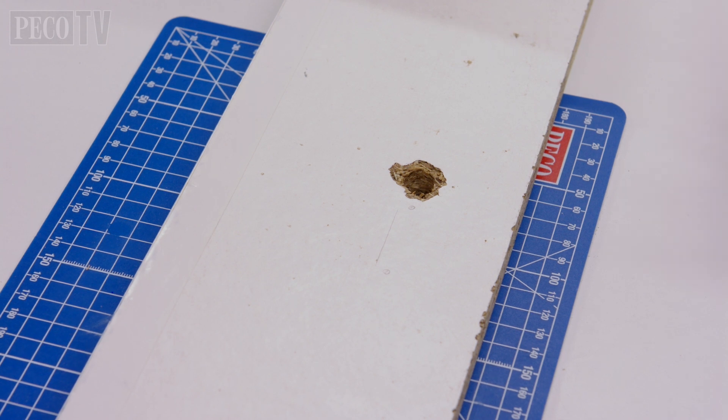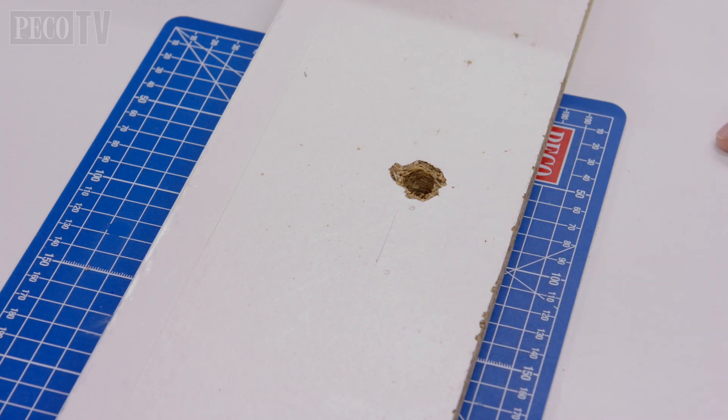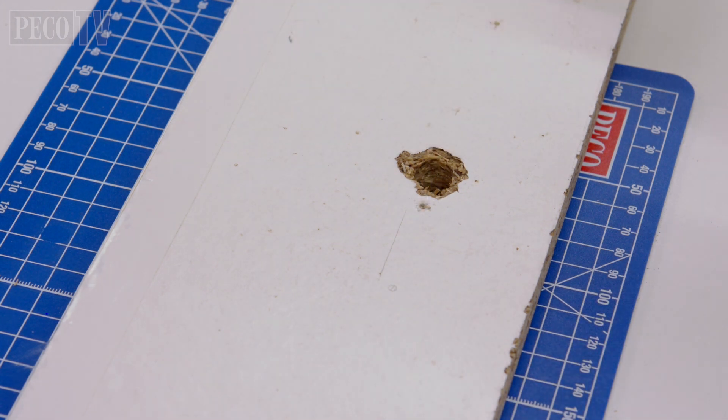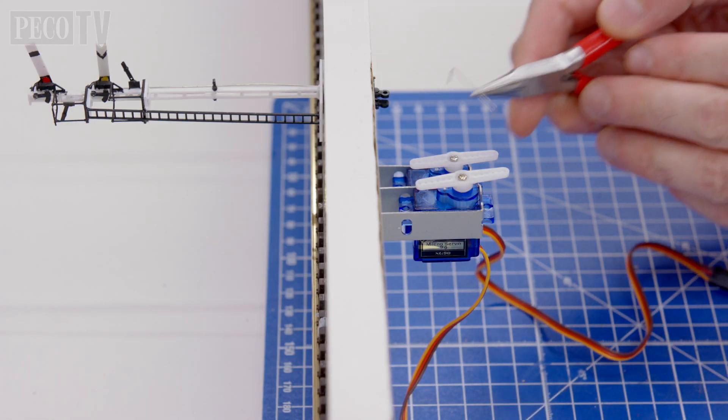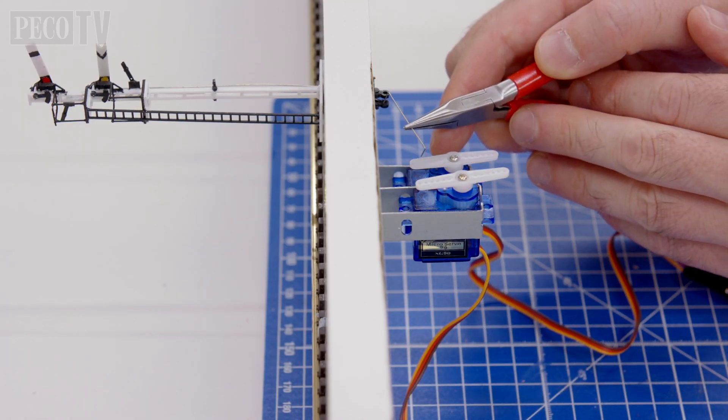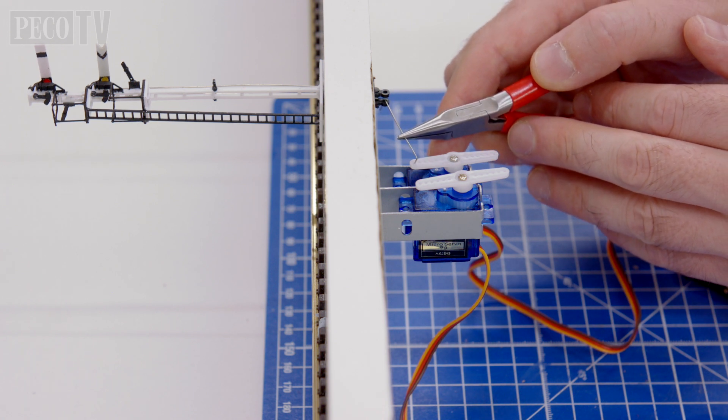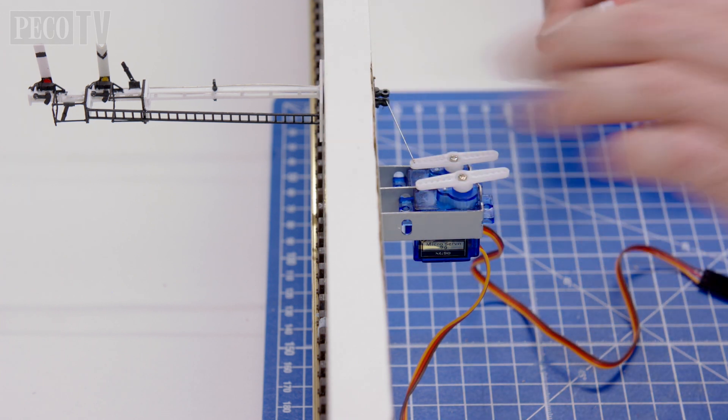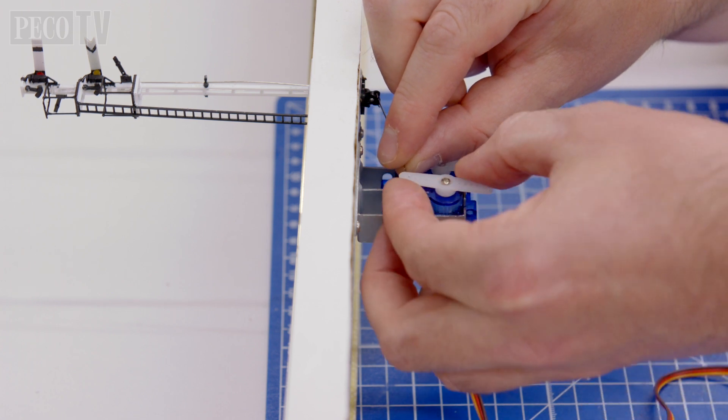Then position the smart switch motors at 90 degree angles to the crank but you will need to stagger them in order to make room for both. You will require a bradawl and a screwdriver to attach them to the underside of your baseboard. Once you have fitted your smart switch motors you then need to attach the wire from the loop end of the crank onto the servo horn and repeat with the second servo.